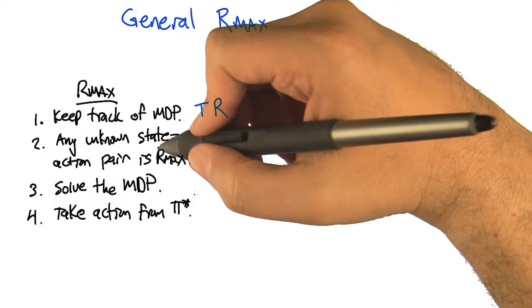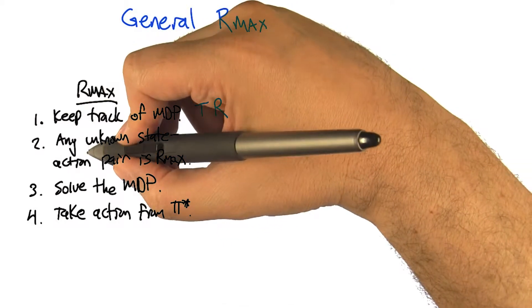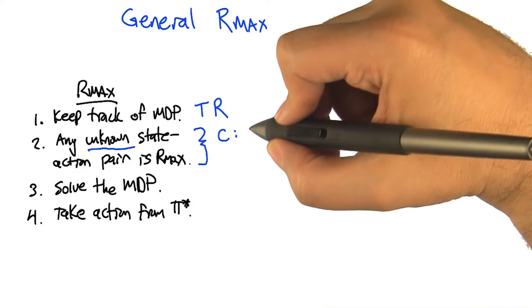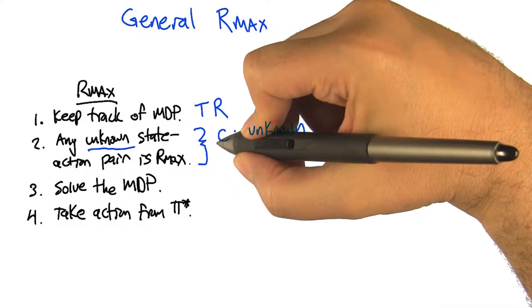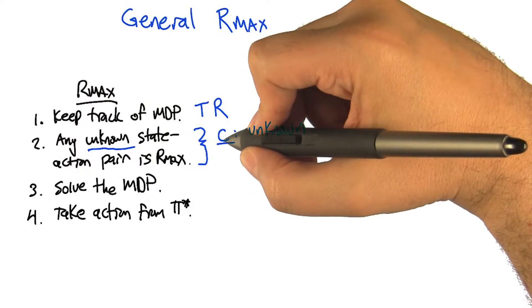The only difference is going to be this notion of unknown, and the idea is that we're going to have some parameter, call it C, that state action pair is unknown if it's been visited, or we've tried it out, fewer than C times.